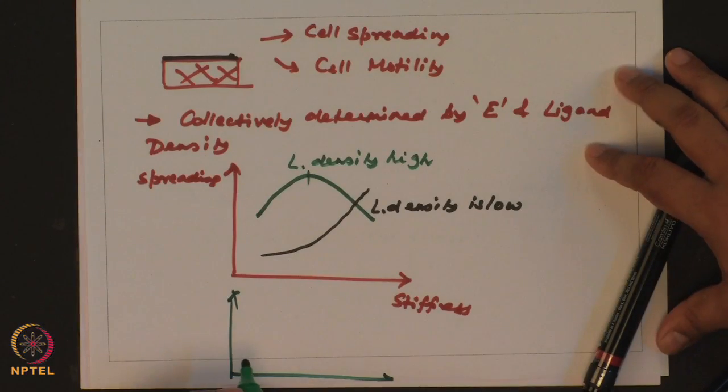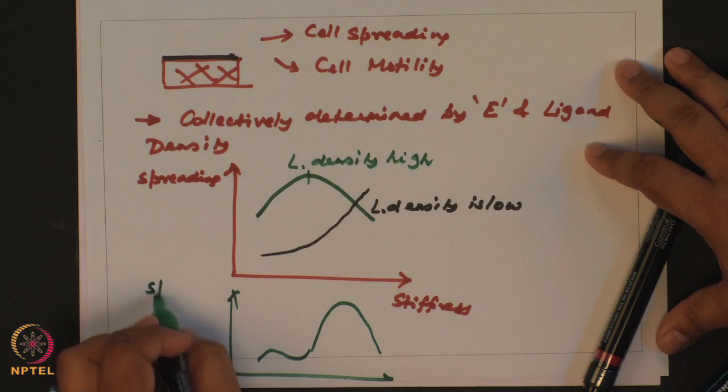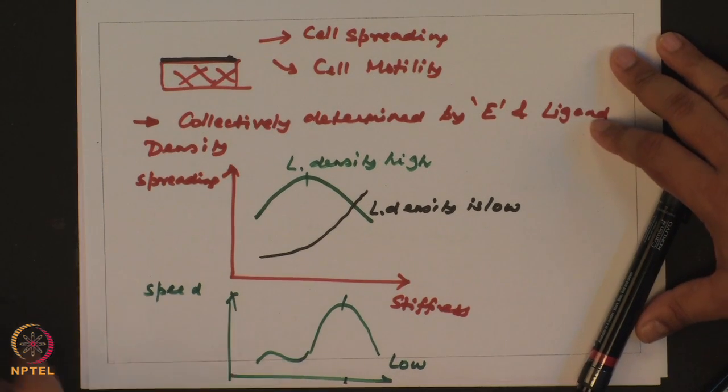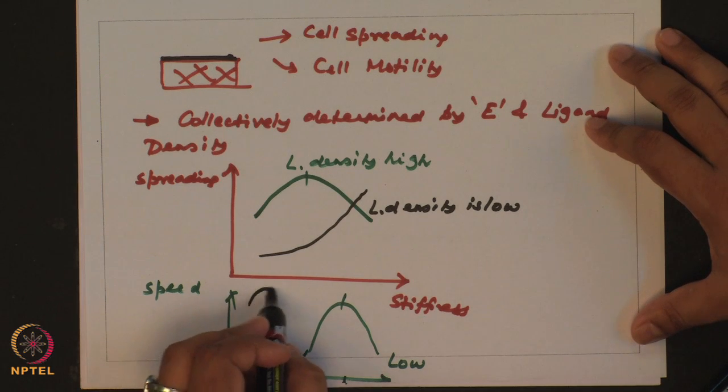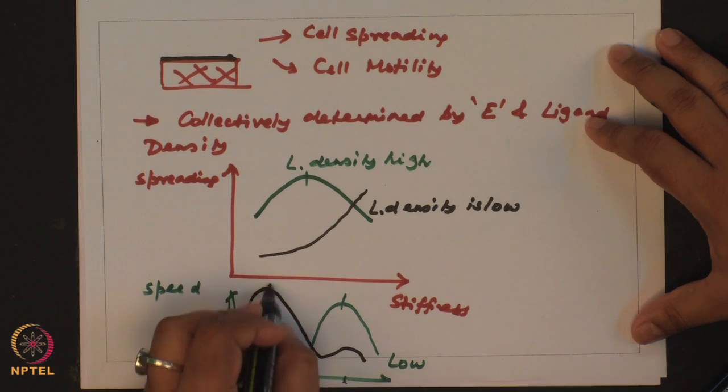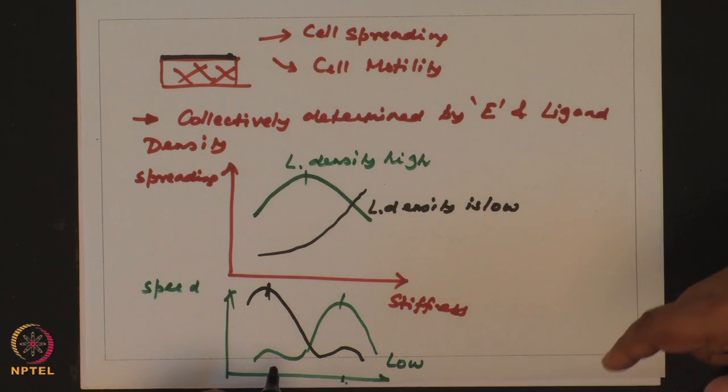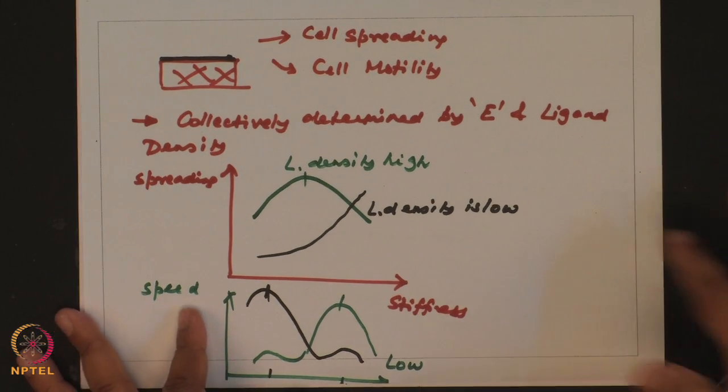In this case what you observe is the maximum spreading is observed at some intermediate stiffness value. While when the ligand density is very low what you find is increasing amount of stiffness leads to increase spreading. This shows you that this is another important parameter that you must tweak in your experiments. For this particular experiments the authors found that in ligand density low what they observed was a biphasic speed effect in speed. When it was low you found maximum motility on a stiff surface. When it was high then the maximum speed was reversed and you got the maximum speed on a softer surface.